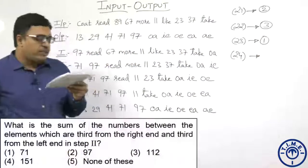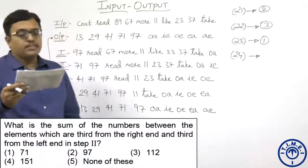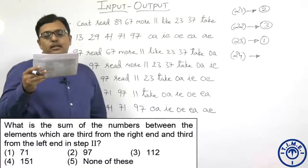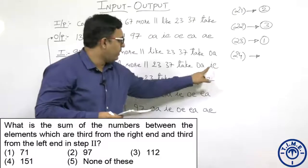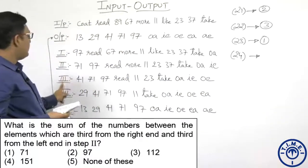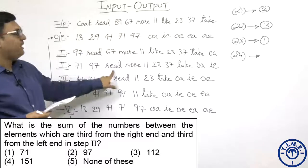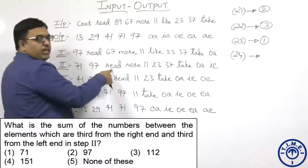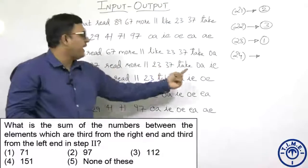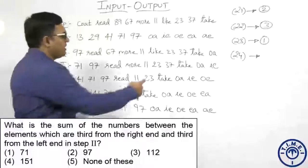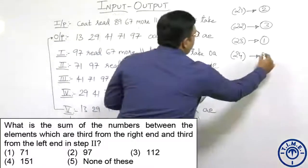What is the sum of the numbers between the elements which are 3rd from the right end and 3rd from the left end in step 2? Step 2: 3rd from the right end is 'take'. 3rd from the left end is 'read'. Between read and take, the numbers are 11, 23, and 37. Sum: 37 + 23 = 60, 60 + 11 = 71. The sum is 71, given in option number 1.